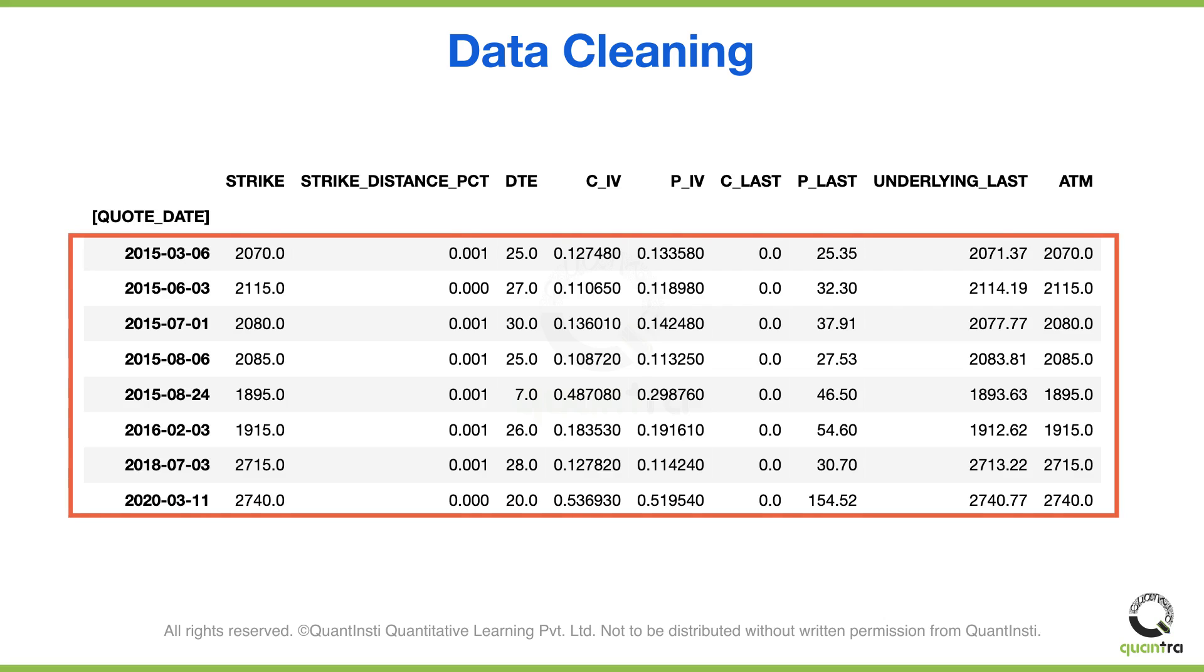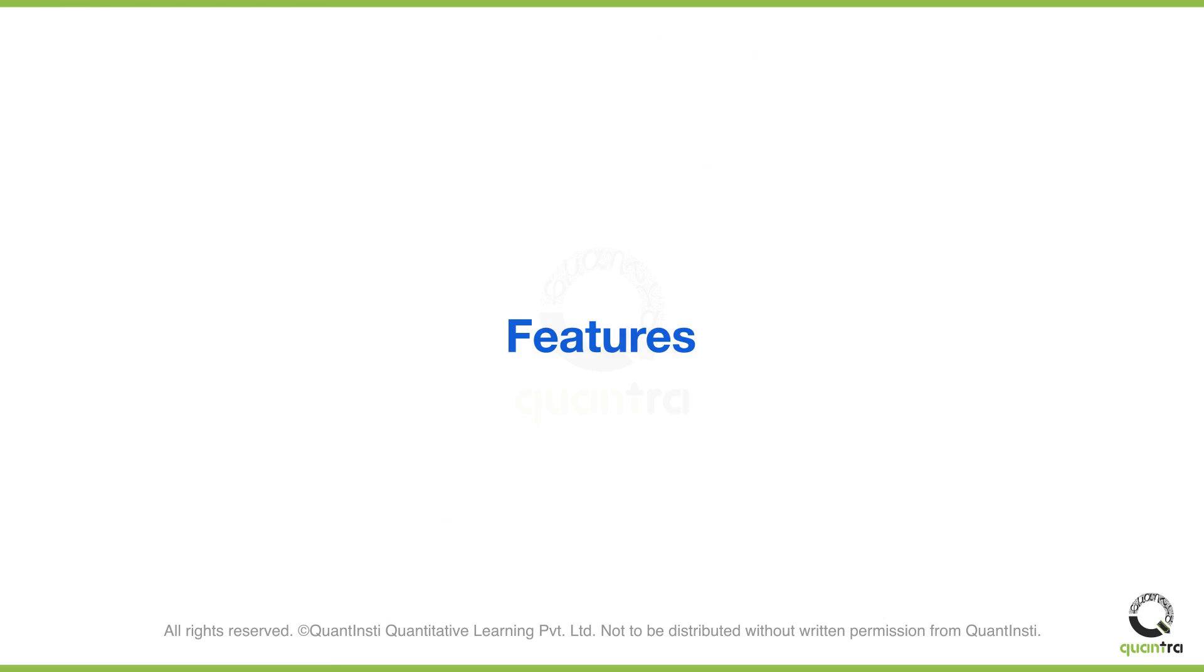The last traded price of an ATM options contract cannot be zero, and hence these rows need to be removed from the dataset. Once we have properly pre-processed the data, we can start working on identifying and creating features and the target variable.